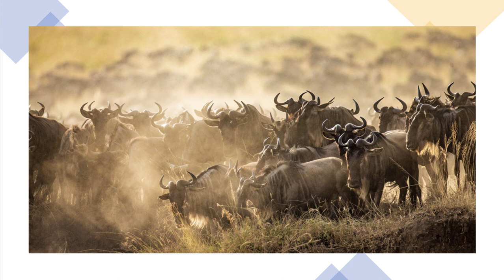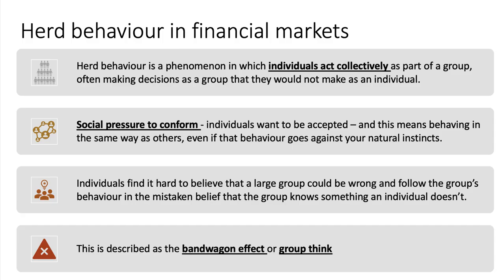This herd mentality — the herd behavior of investors — is a really important aspect of speculative behavior. Herd behavior is a phenomenon in which individuals act collectively as part of a group, and often they're making decisions as a group of investors that they would not make as an individual. There are generally two accepted explanations of herd behavior. The first is the social pressure to conform — lots of psychological studies talk about conformity theory, that people want to be accepted within groups, and oftentimes this means behaving in a similar way to others, even if that behavior goes against your natural instincts.